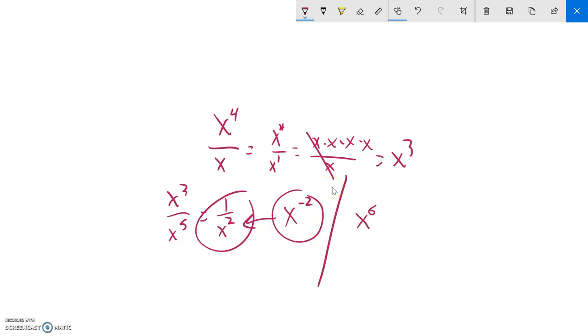How about if I had x to the 6th times x to the negative 3? Well, that's the same as x to the 6th times 1 over x cubed, which is x to the 6th over x cubed, which is x to the 3rd. Notice I could add those. 6 minus 3 is just 3.